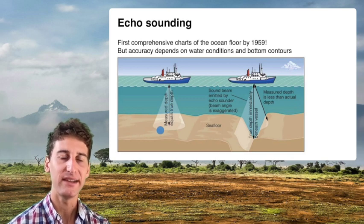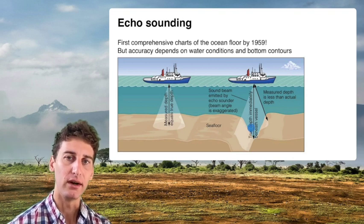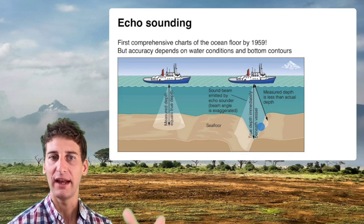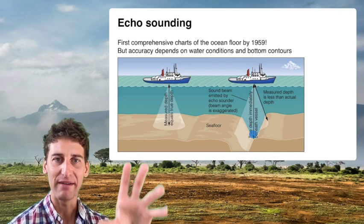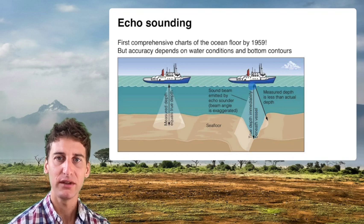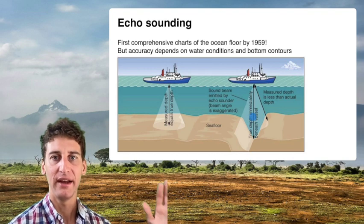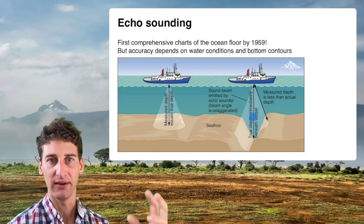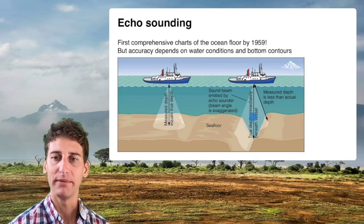On a flat seabed, beam spreading isn't a problem because everything is close to the same depth. But if there's a trench, a seamount, or other sharp local topography, you're going to get some average reading — some of the sound comes back sooner, some comes back later. You won't be able to capture the gradient in the seafloor needed to determine whether something is a seamount, a plateau, or something else.